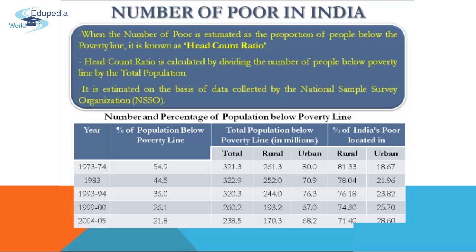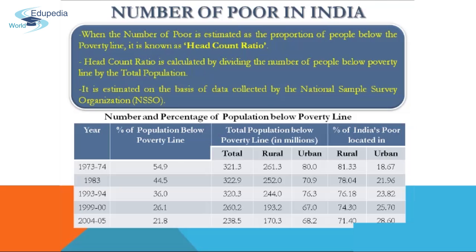In terms of proportion, in 1973-74, 54.9 percent of the total population was below the poverty line, and in 2004-05 it had fallen to 21.8 percent. So from 1973-74 to 2004-05 there has been a considerable decline, but the nature of decline is not encouraging — the ratio is declining much slower than the absolute number of poor.